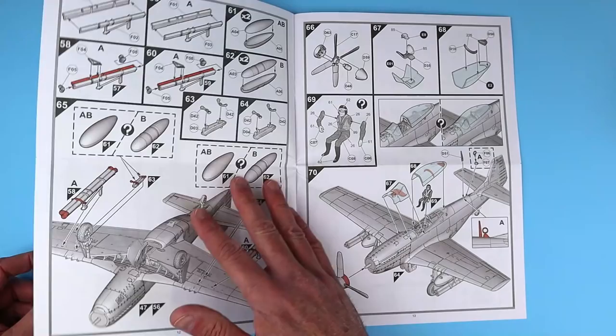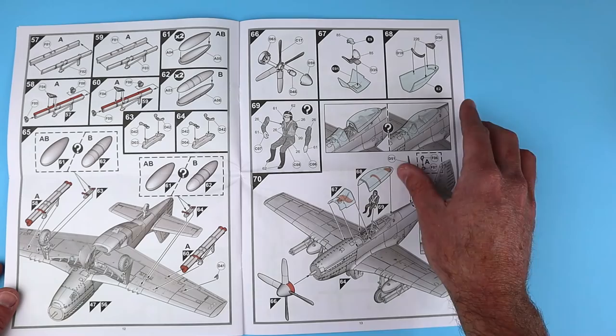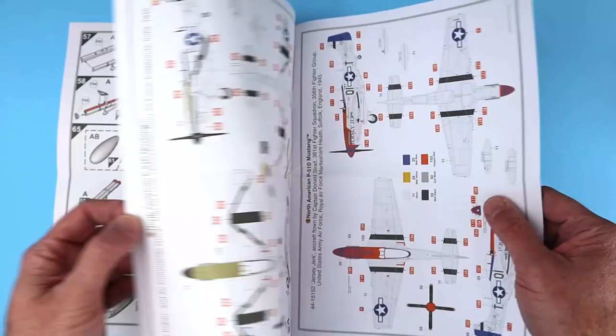This kit has the bazooka tubes, which is a really cool feature. It also includes two different styles of drop tank options. The engineering of the windscreen and canopy are really nice as well. We'll see how those fit as we progress through the build.